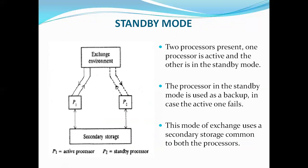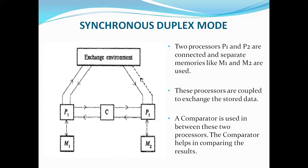The centralized processor system has two processors. Both processors share the same secondary storage. One processor will be in active condition and another processor will be in idle condition. The processor P1 is in active condition and P2 is in standby condition. If P1 fails, then P2 will take the charge. Whenever one processor fails, the other will take the charge — that's why this is called standby mode. When P1 fails, P2 will access the entire data through the shared secondary storage and take the charge accordingly.